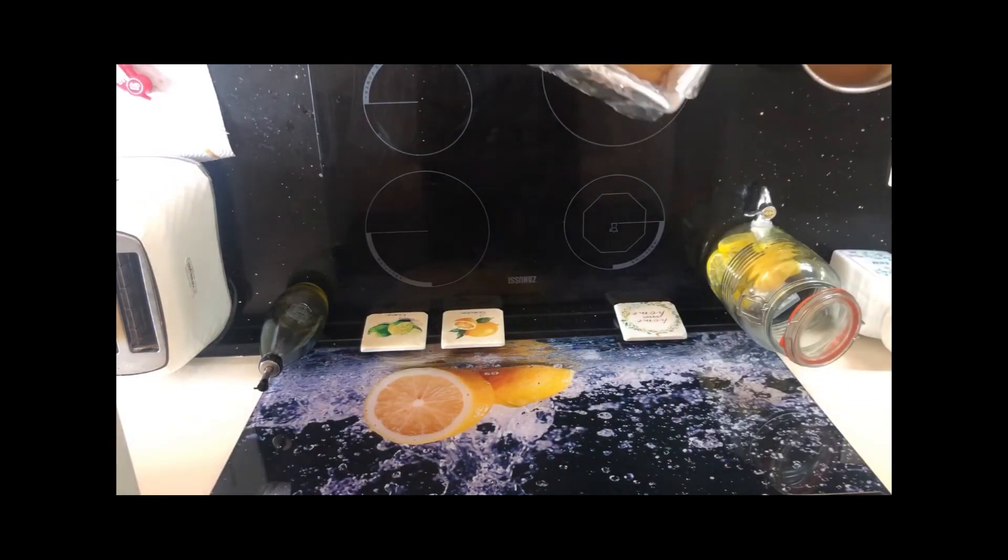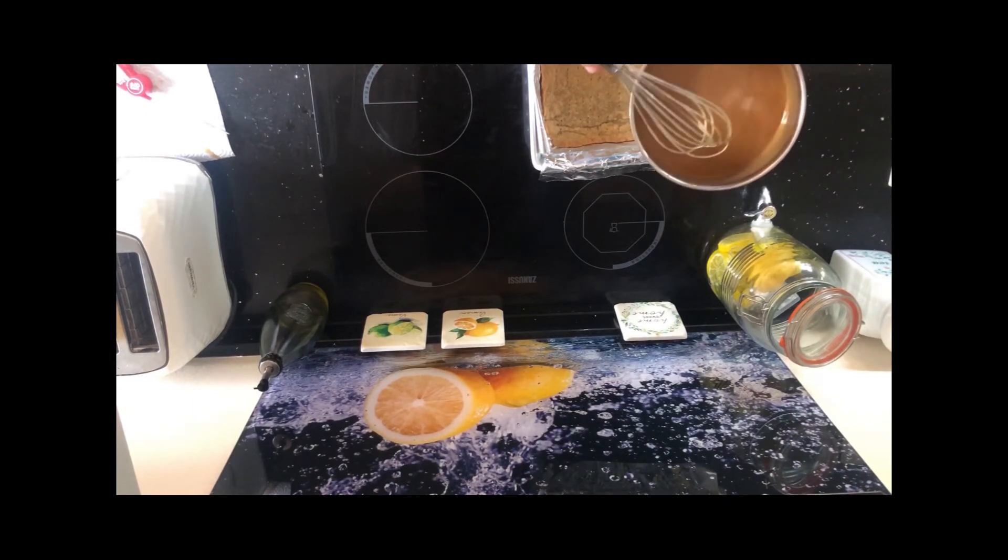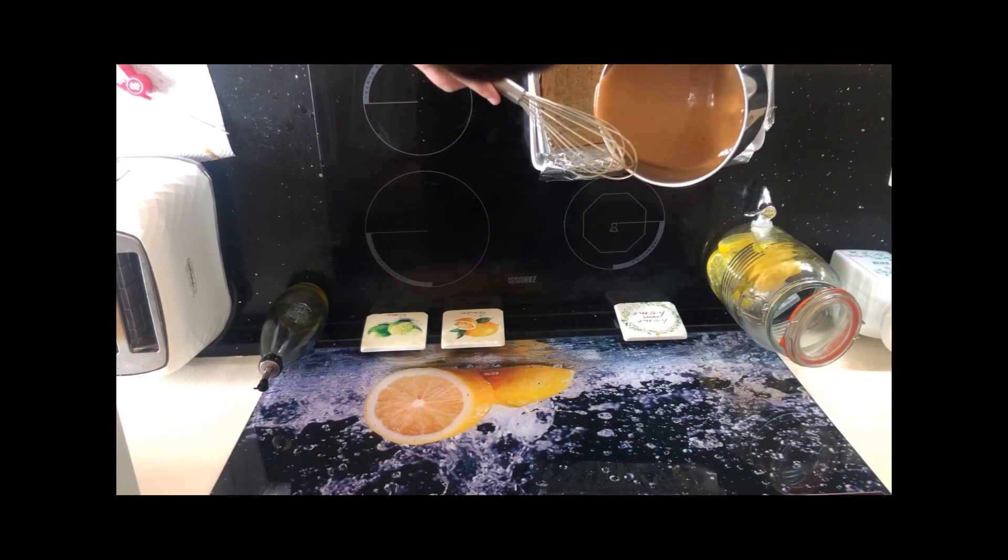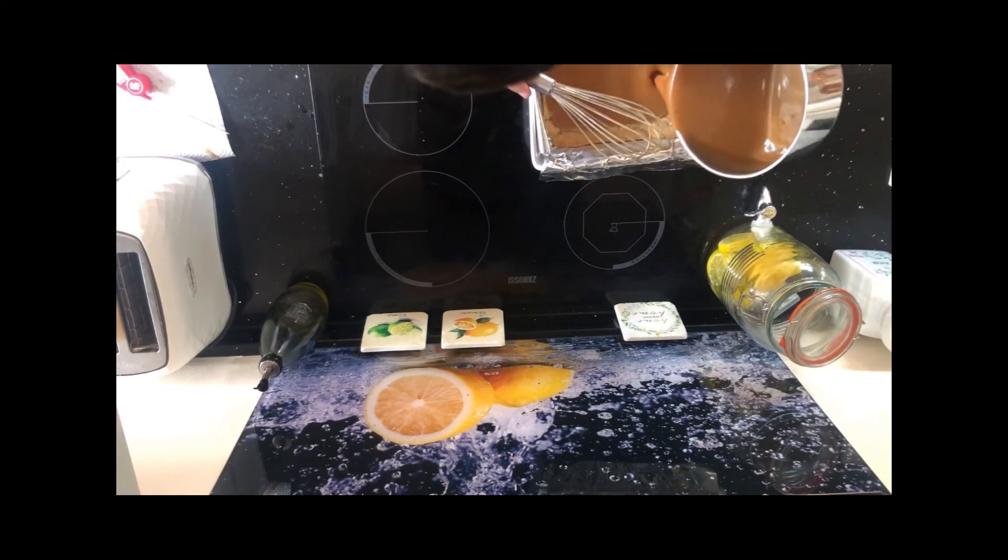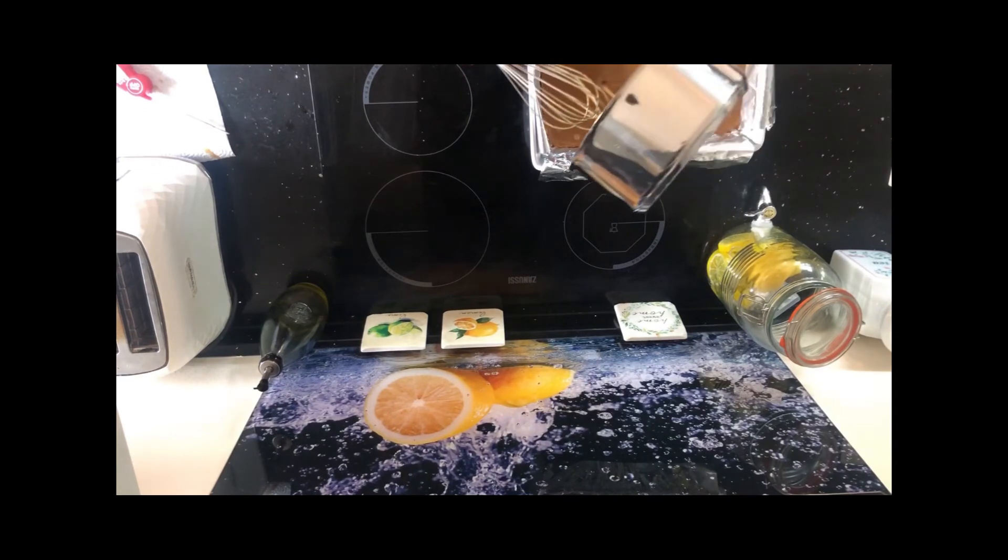And then whisk for about 15 to 20 minutes. You're aiming to get your caramel around 115 degrees. Once this happens, remove from the heat and spread evenly over the shortbread, attempting to remove any air bubbles. Once done, leave in the fridge to cool and now you can start tempering your chocolate.